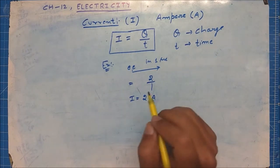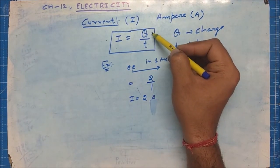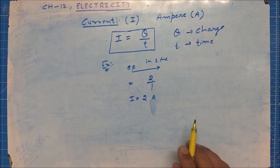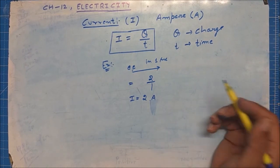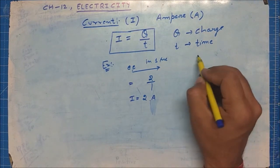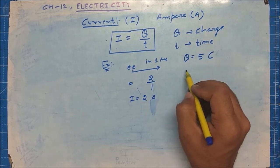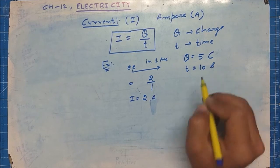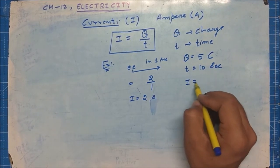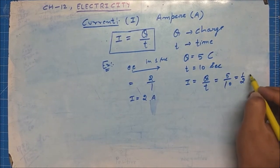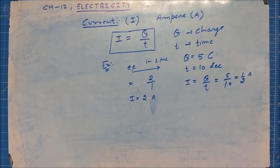The rate of flow of charge is known as current — how much charge flows in how much time. For example, if 5 coulombs of charge flow in 10 seconds, then I = Q/T = 5/10 = 0.5 ampere. This is how we calculate the current.